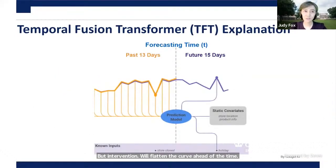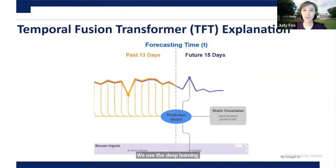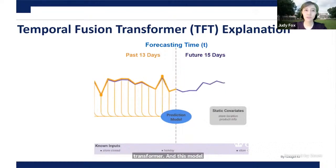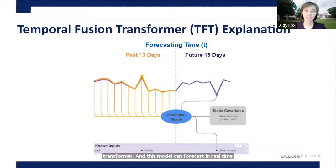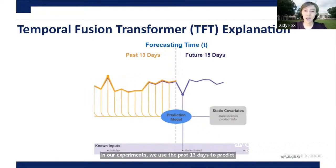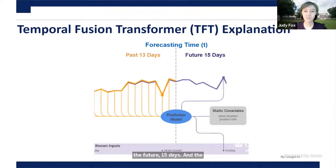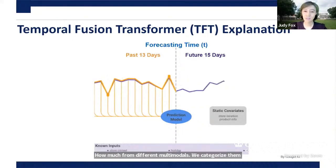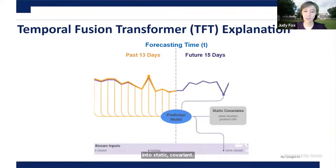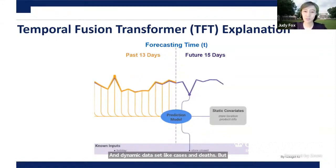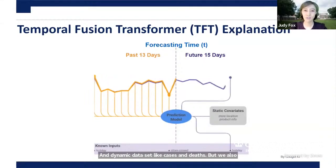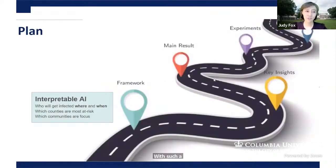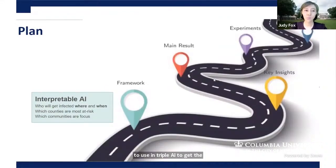We use the deep learning model known as the Temporal Fusion Transformer, or TFT. This model can forecast in real-time. In our experiments, we use the past 13 days to predict the future 15 days. Data comes from different multi-modal sources, categorized into static covariates and dynamic datasets like cases and deaths, and we also incorporate known inputs such as upcoming Christmas and New Year holidays. Our goal is to use interpretable AI to gain knowledge about where and when infections will happen.